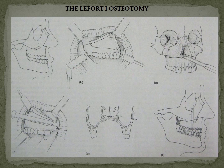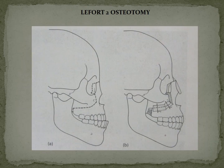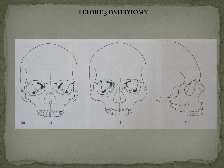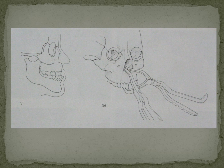In LeFort 1 osteotomy, the entire maxilla is cut following the LeFort 1 fracture line using specialized instruments including a pterygoid chisel, the maxilla is down-fractured using Rowe's disimpaction forceps, mobilized, and repositioned as per indication — superior, inferior, anterior, or posterior. LeFort 2 osteotomy follows the LeFort 2 fracture line. LeFort 3 osteotomy mobilizes the entire facial skeleton — called craniofacial disjunction — and is performed in very severe facial deformity cases and certain syndromes.